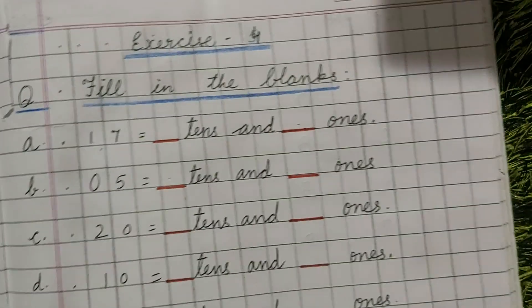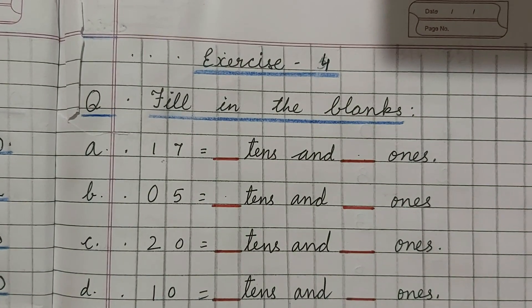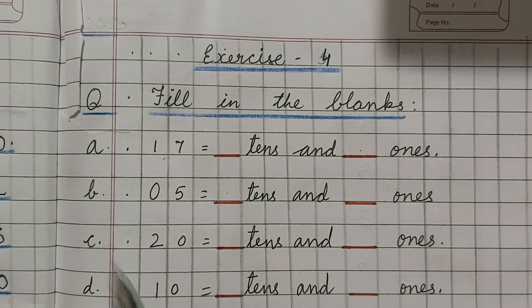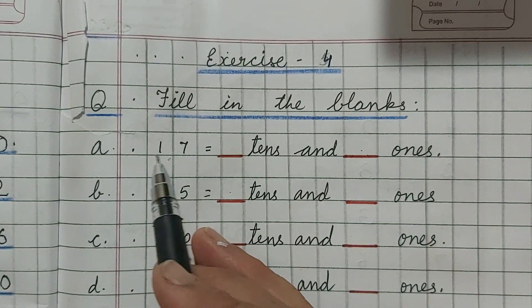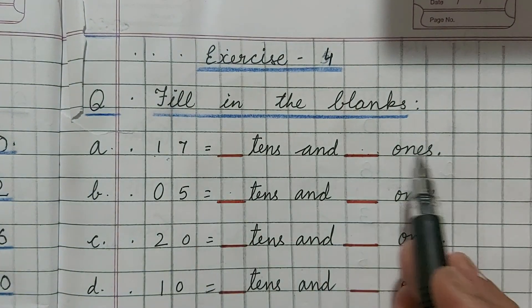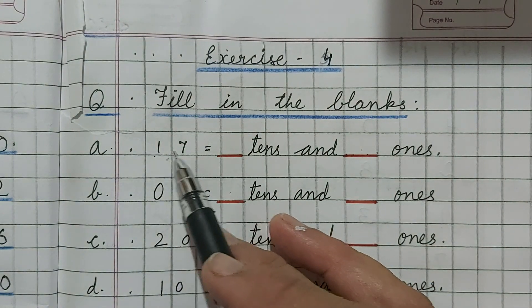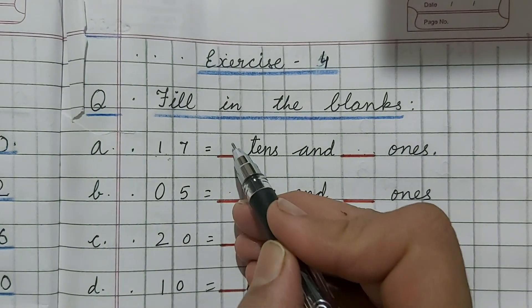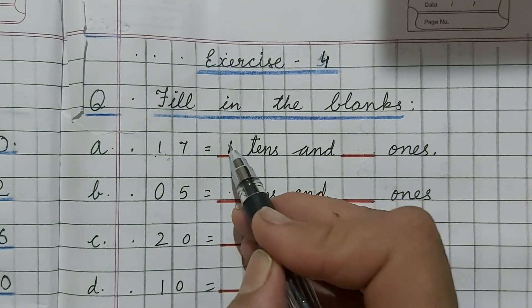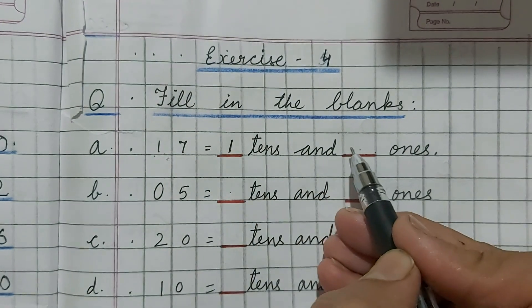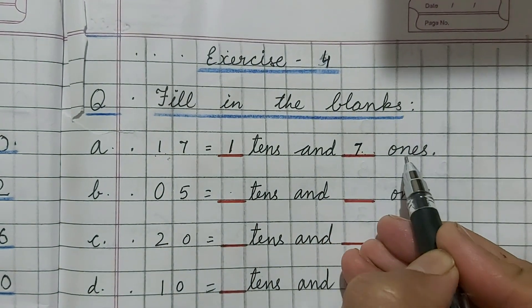And now today we are going to do third type of exercise. This is fill in the blanks. The number is given 17. You have to fill this number here. In 17, how many tens are there? 1 ten. So, we will write here 1. 1 ten. And how many ones? 7 ones.